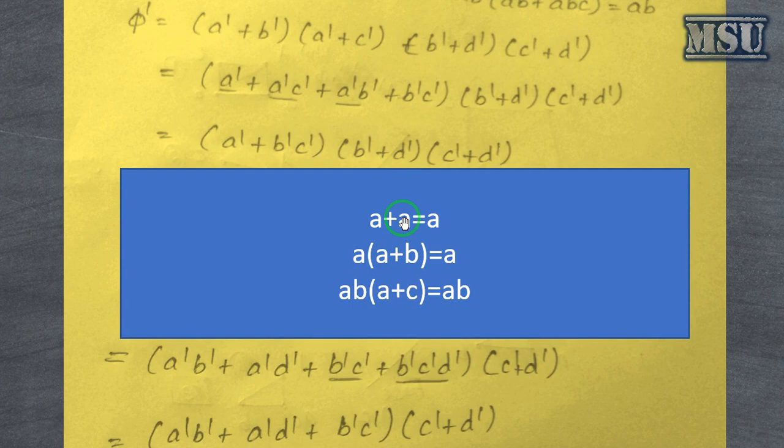So Boolean algebra we are having a plus or operator and concatenate and operator. So we know that a plus a is always result in a. a into a plus b equal to which is always the truthness of this equation depends upon only a.